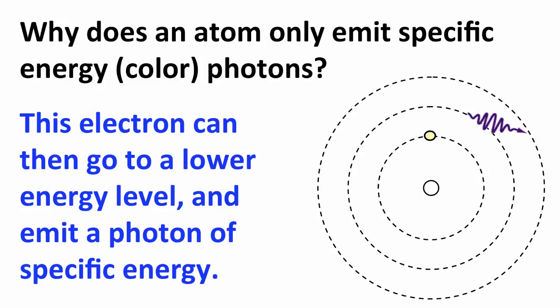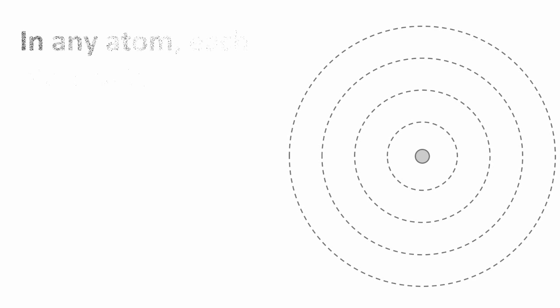Another electron could go from the third energy level maybe to the first energy level. And that's a different energy difference in that transition. And it would emit a photon of, let's say, purple light. A different energy, different wavelength, different frequency, but very specific to that substance.